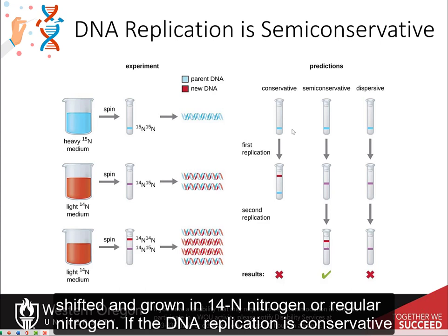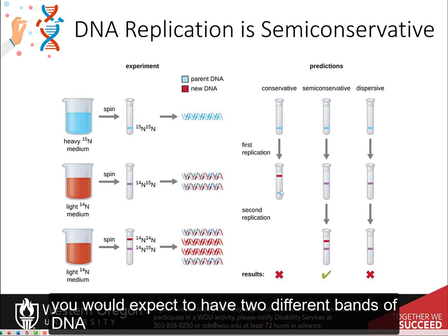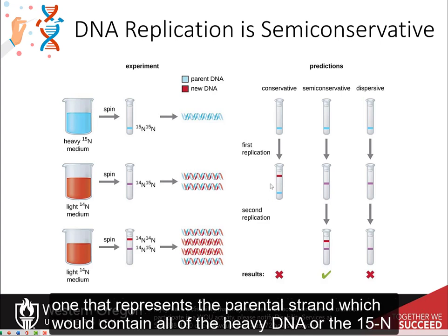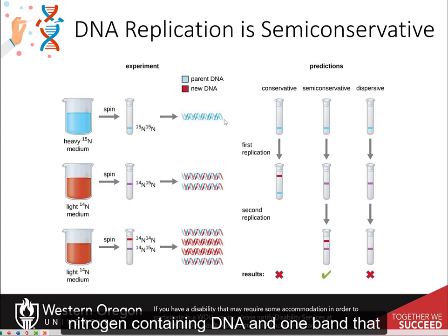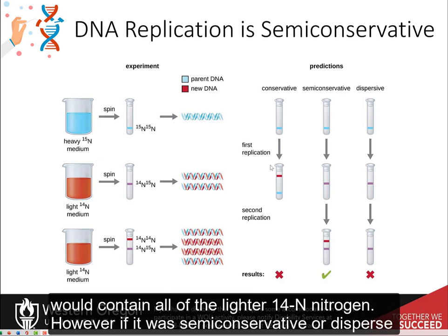If DNA replication is conservative, you would expect to have two different bands of DNA: one that represents the parental strand, which would contain all of the heavy DNA or the 15N nitrogen-containing DNA, and one band that would contain all of the lighter 14N nitrogen.